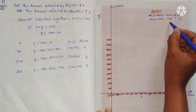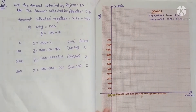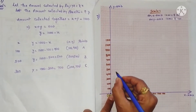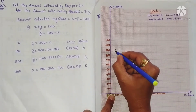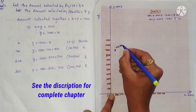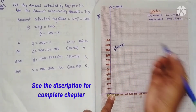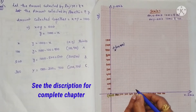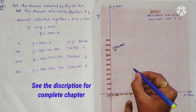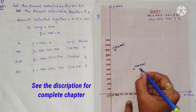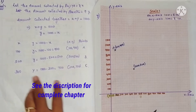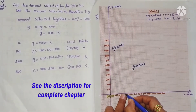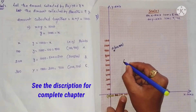On the graph: X equals 100 and corresponding Y equals 900, so point A is (100, 900). Point B is (500, 500) — X 500 and Y also 500. The third point C: X is 300 and Y is 700, so point C is (300, 700).